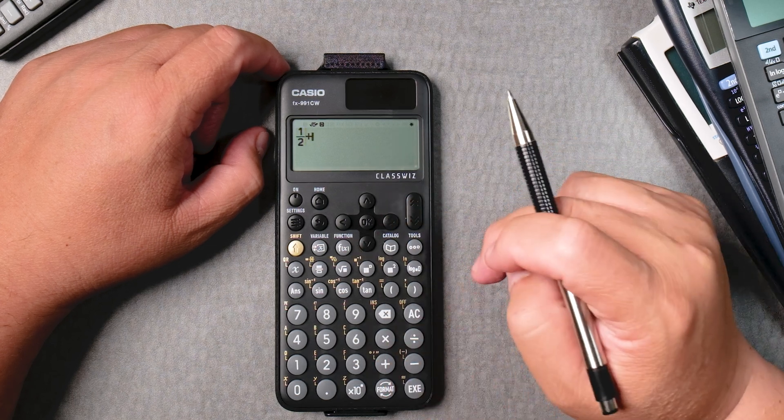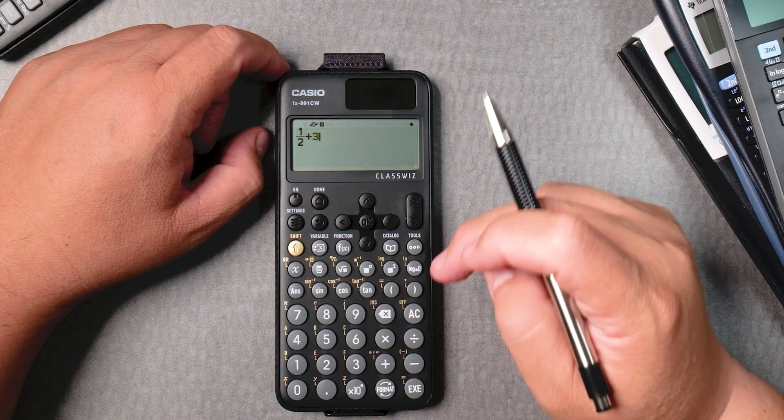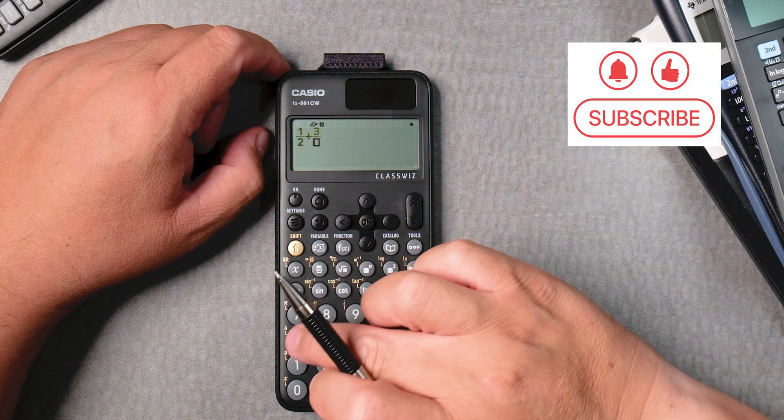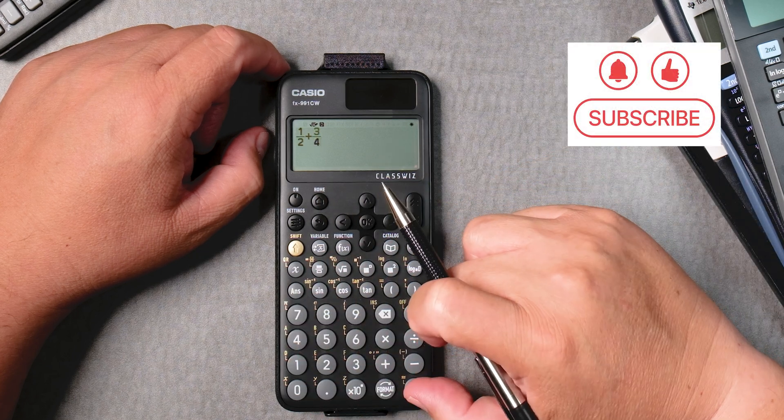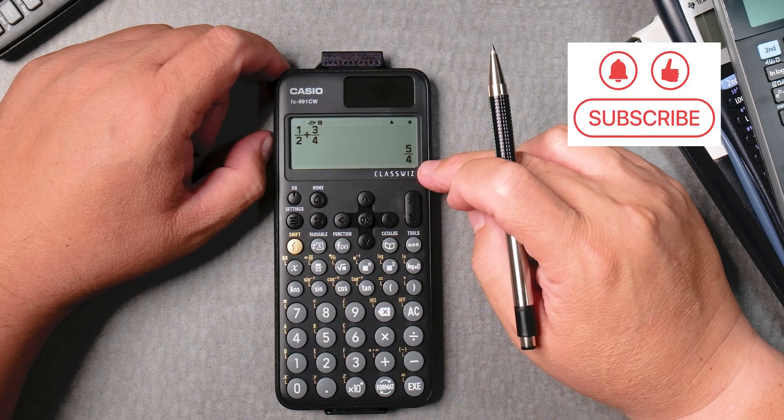Which is right here. We can type three first and then the fraction button, over four, and then the exe button. Boom, five over four.